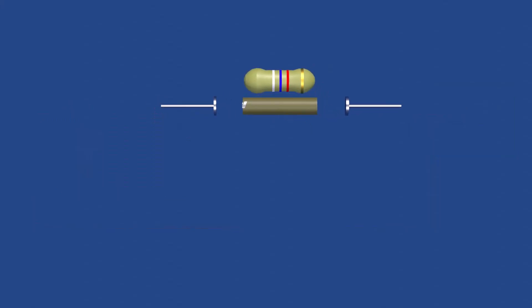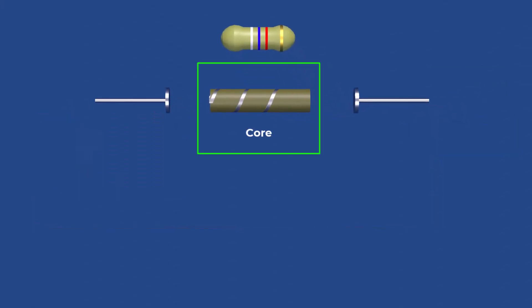A resistor consists of three basic components: the core material, terminals, and encapsulation.